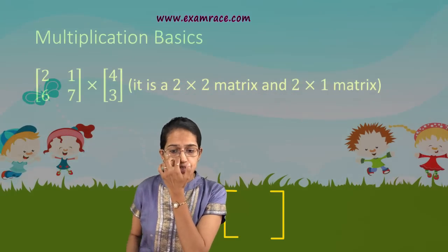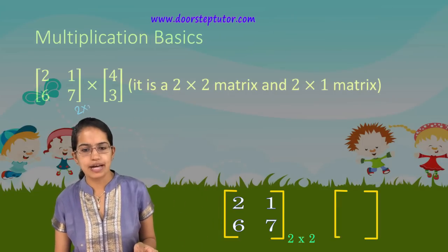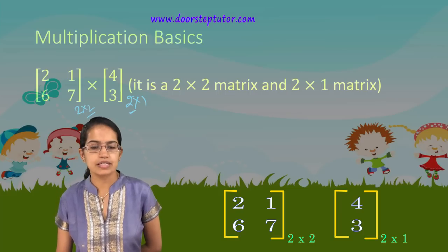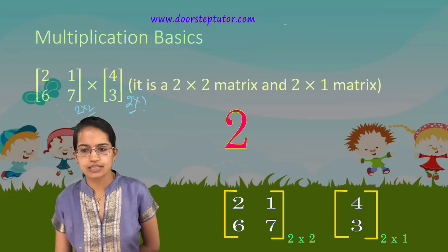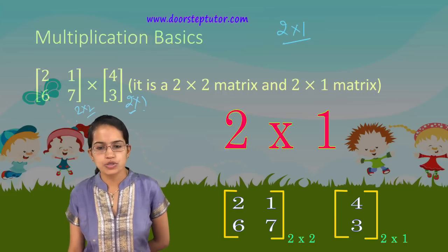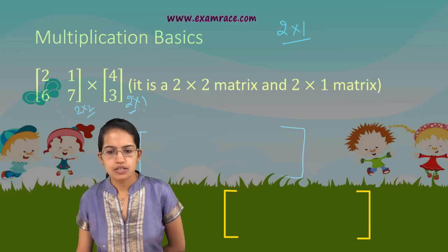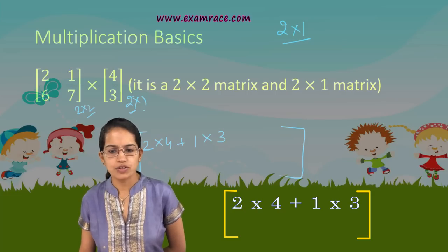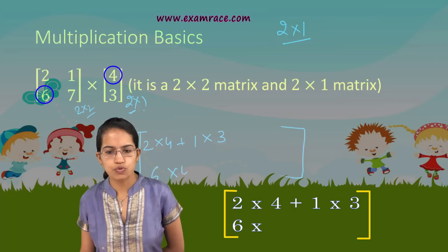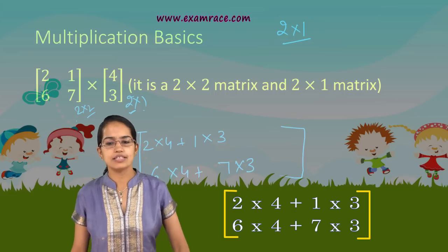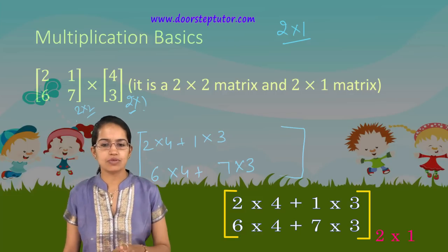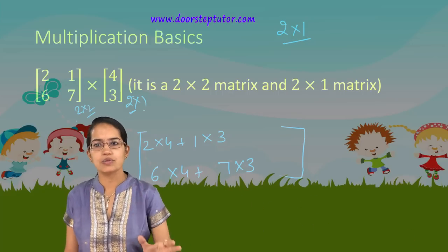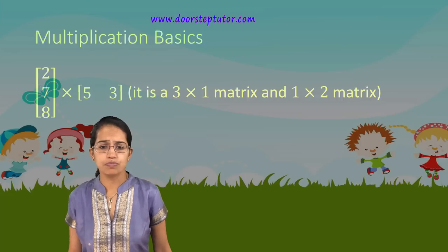The next example is a 2×2 matrix multiplied by a 2×1 matrix. Since the columns of the first equal the rows of the second, it is conformal for multiplication, and the resultant is a 2×1 matrix. The calculation gives 2×4 + 1×3 for the first element, and 6×4 + 7×3 for the second. This 2×1 matrix is the resultant answer.